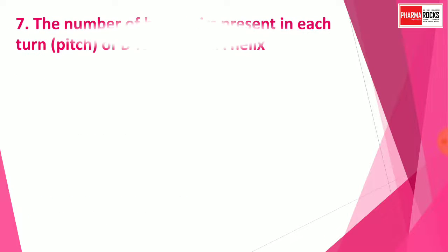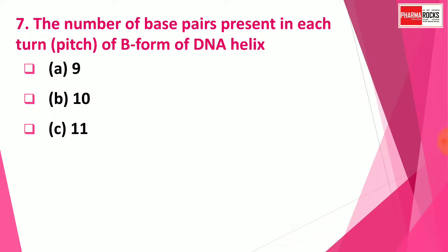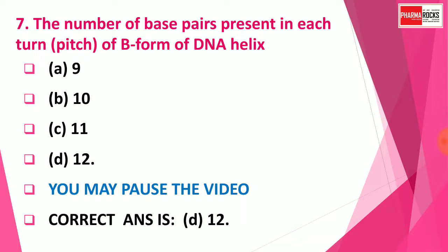Question number 7: The number of base pairs present in each turn of the B-form of DNA helix is — Option A: 9, Option B: 10, Option C: 11, Option D: 12. The right answer for this question is Option D: 12. The number of base pairs present in each turn of the B-form of DNA helix is 12.